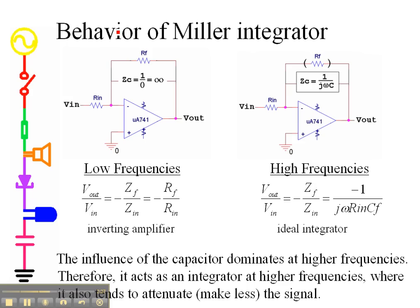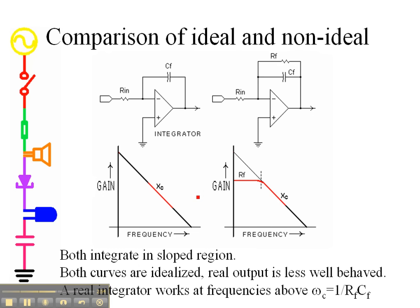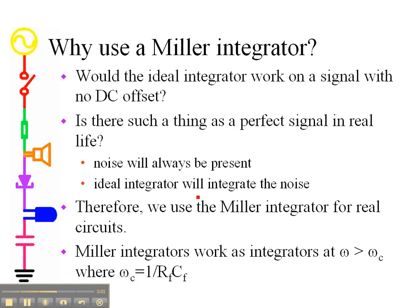So the behavior of the Miller integrator is that it does not work at low frequencies but rather works only at high frequencies. At low enough frequencies, it becomes just an inverting amplifier. So there is a limitation on integrators that you have to operate them at a high enough frequency or they don't really work right, and we will see how that works in just a little bit.